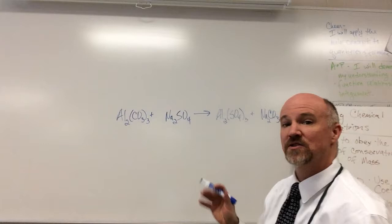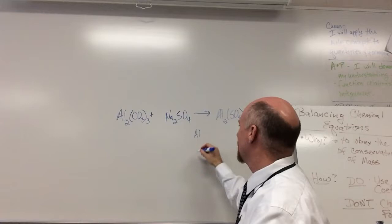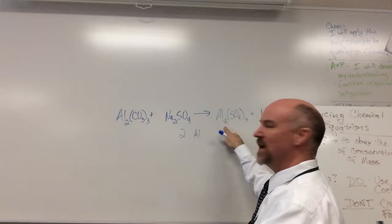Sometimes the recipe is already correct because let's look. How many aluminum do I have at the beginning? Two. How many at the end? Two. Already balanced.